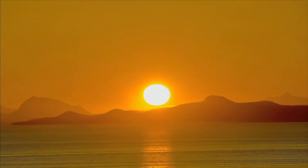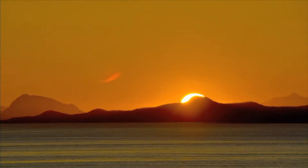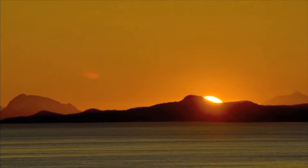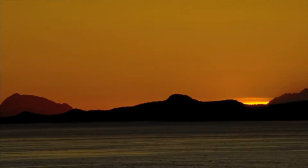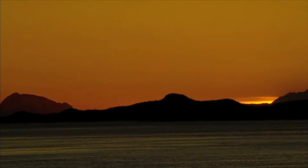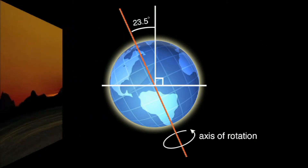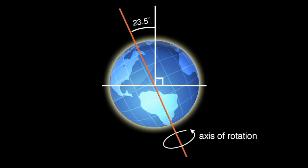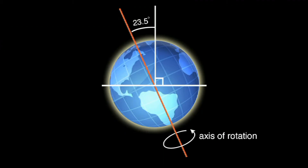Why does the length of daylight and the seasons change throughout the year? The answer all depends on Earth's tilt. The Earth is tilted about 23.5 degrees, which causes the seasons and the change in the length of days on Earth.